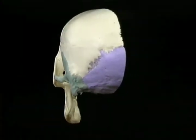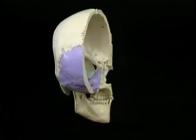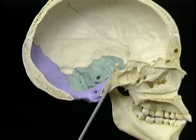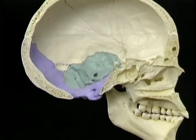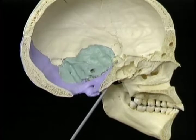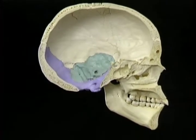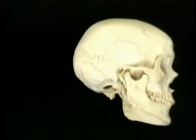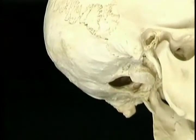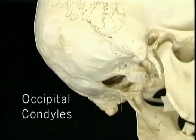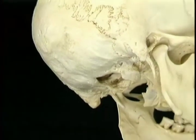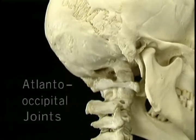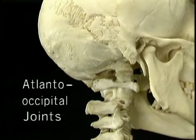Let's look at the occipital bone on the inside in a skull that's been divided in the midline. Here's the foramen magnum. Here's the basilar part of the occipital bone. It slopes forwards and upwards more steeply on the inside than on the underside, since it's triangular in sagittal section. On each side of the anterior half of the foramen magnum are the two occipital condyles. The occipital condyles are the joint surfaces which articulate with the atlas vertebra to form the atlanto-occipital joints.